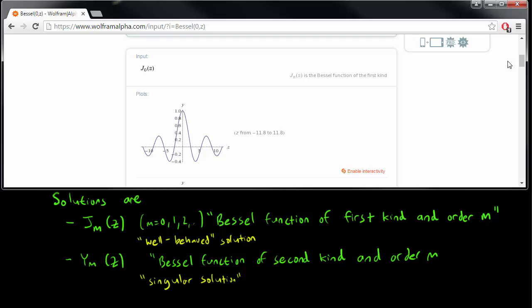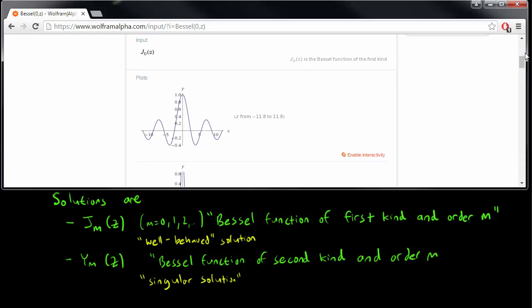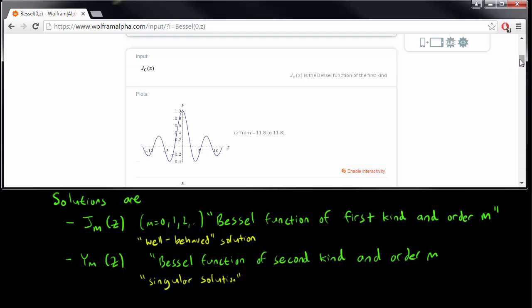And this is what the Bessel function of the first kind looks like. As you see, it's well-behaved, even at z equals 0. So how the Bessel functions all behave is that they are going to oscillate and decay as z gets large, whether in the positive direction or the negative direction.